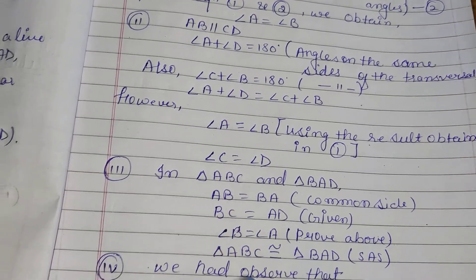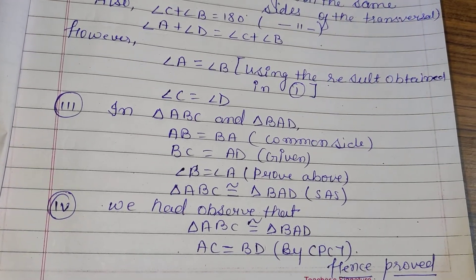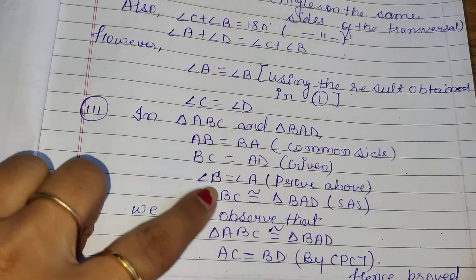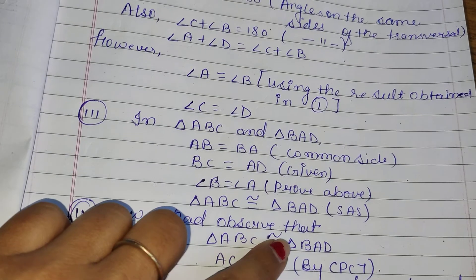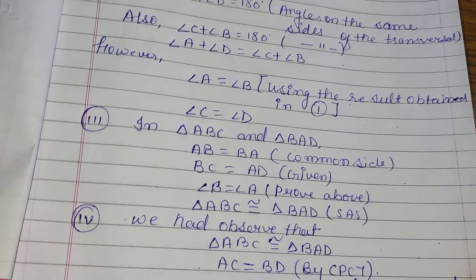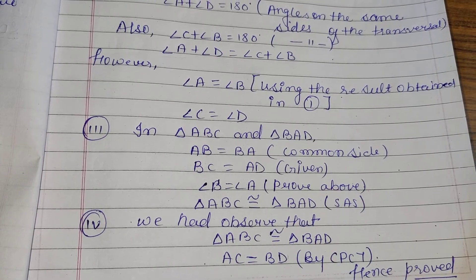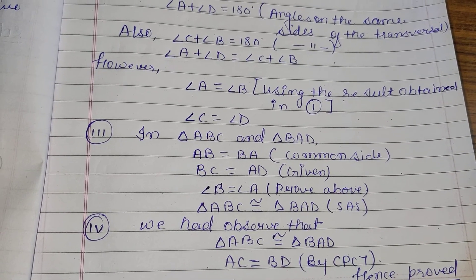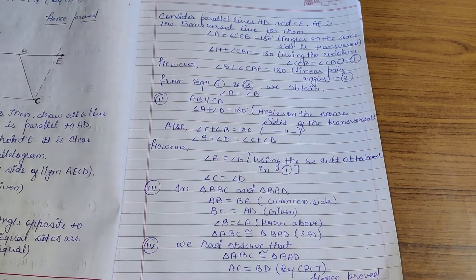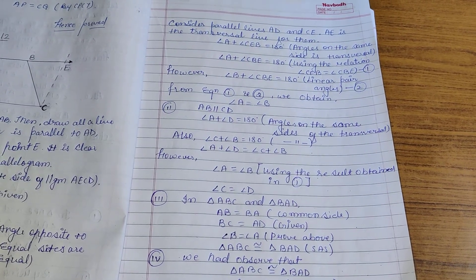In the fourth part, since triangle ABC is congruent to triangle BAD, by corresponding parts of congruent triangles we can write AC is equal to BD. So question number 12 is complete. Your exercise 8.1 is complete.